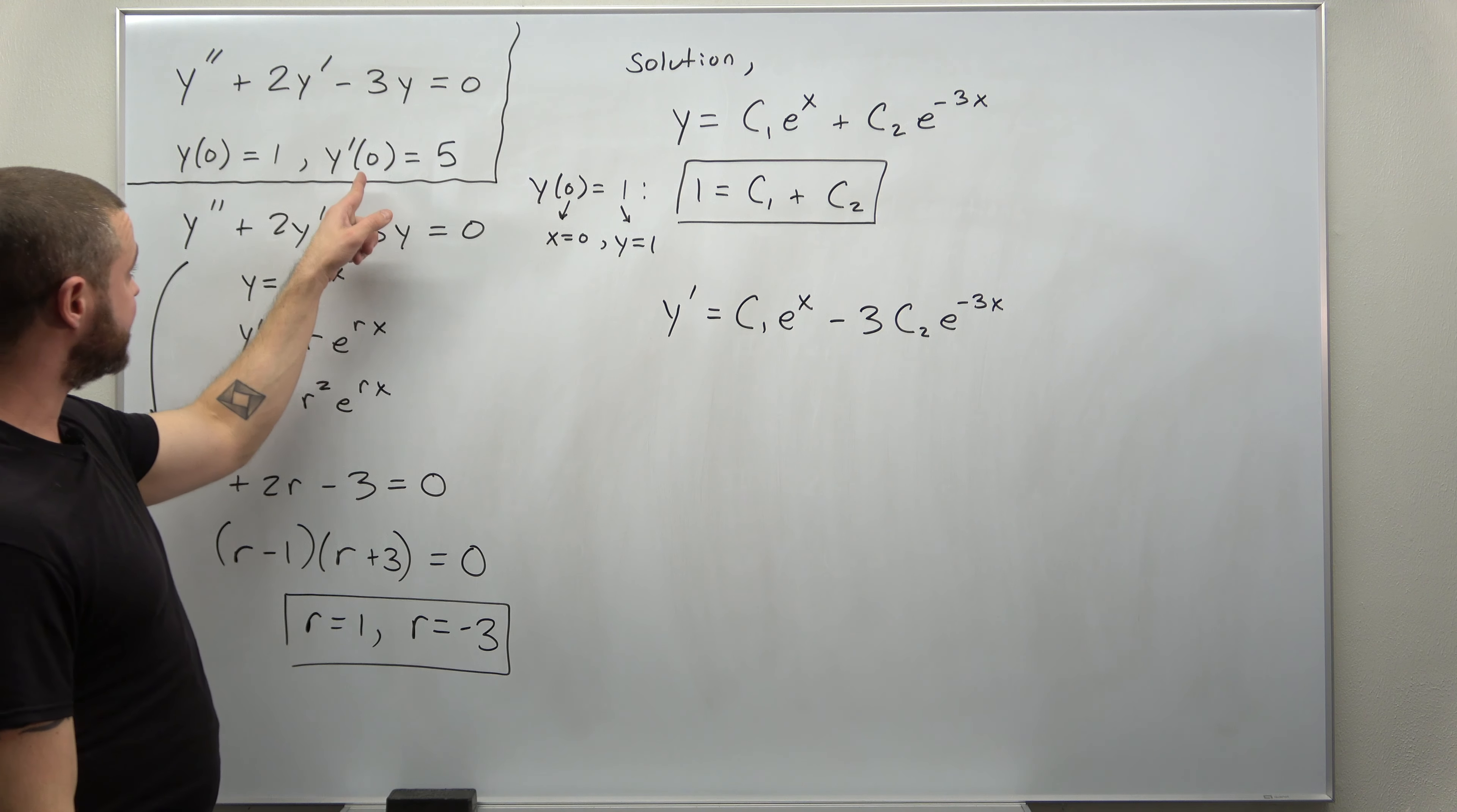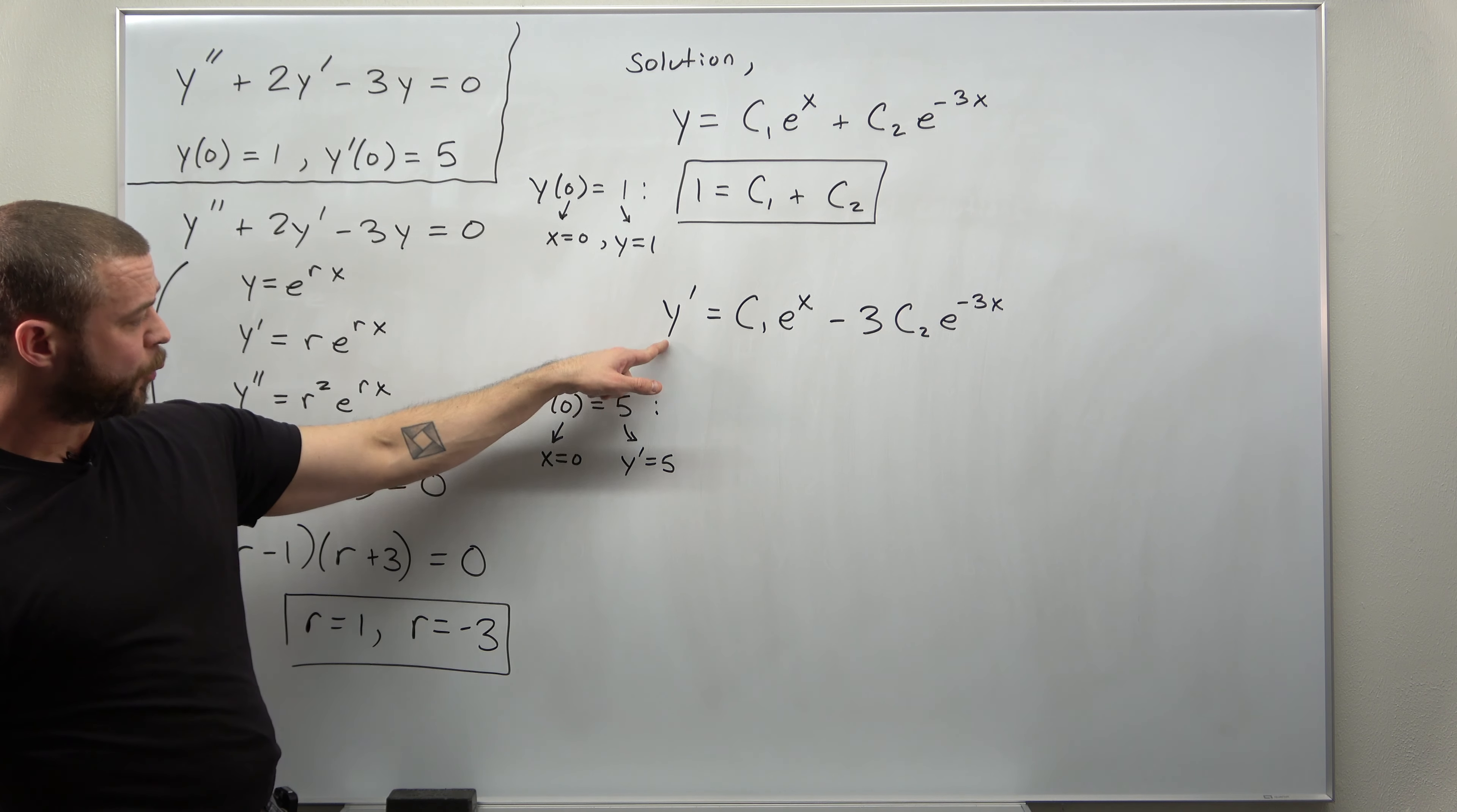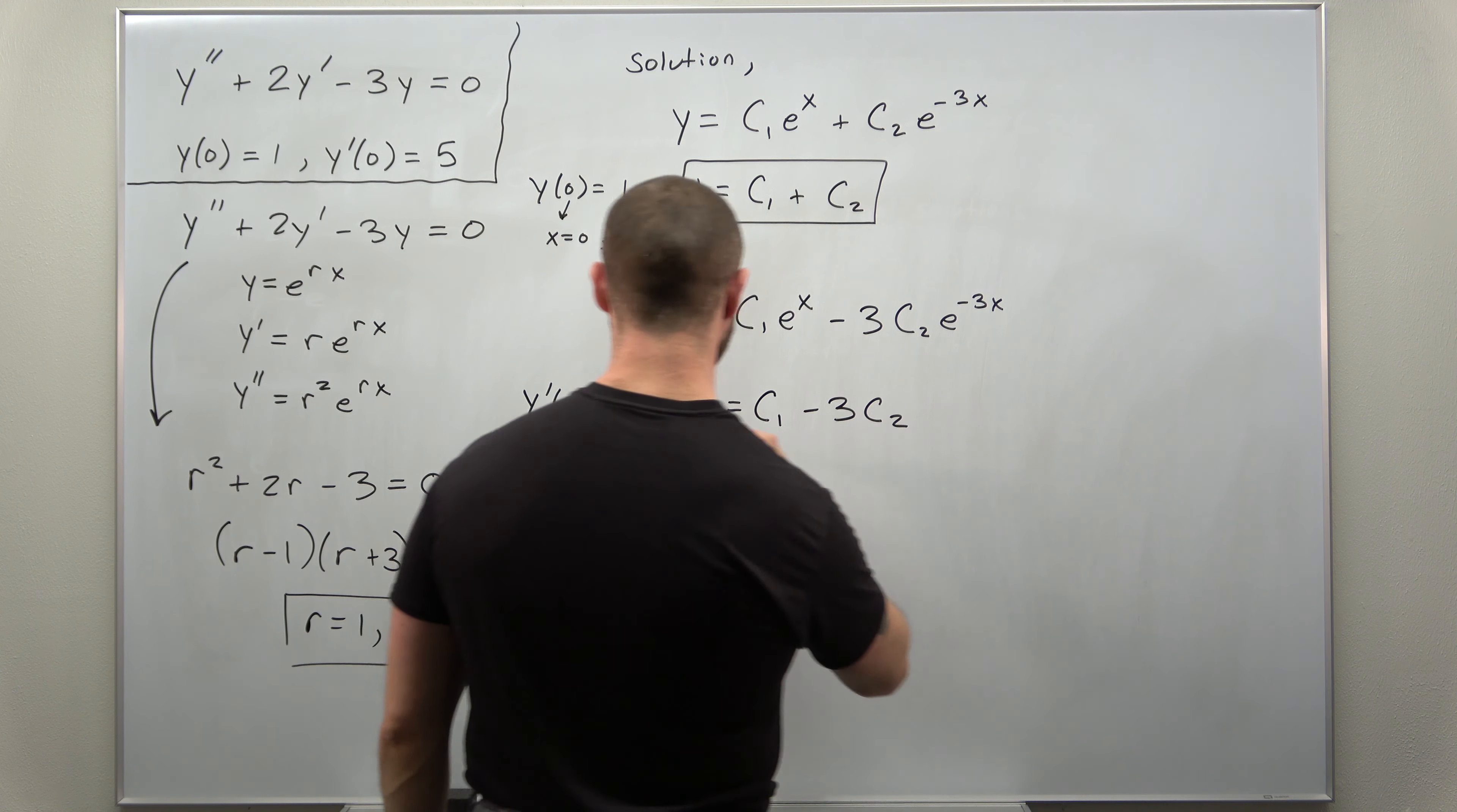Now, we can make use of our derivative initial condition, which is y prime of 0 equals 5. So in other words, x is 0 and y prime is 5. And we plug that in. y prime we're given is 5. And same thing as before, plugging in x is 0, your two exponential terms give you e to the 0, which is 1. Your right-hand side leaves you with c1 minus 3c2.